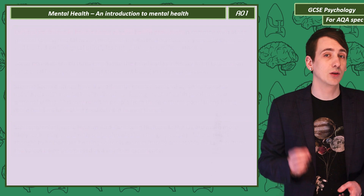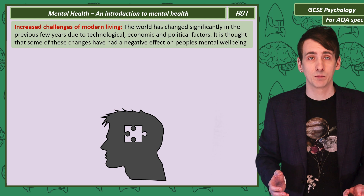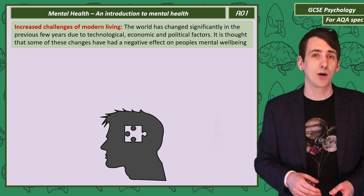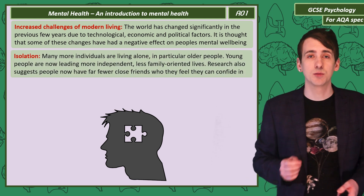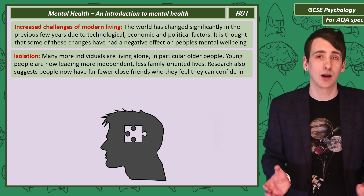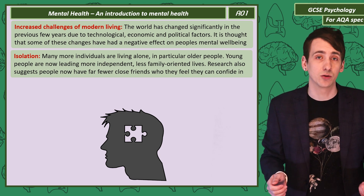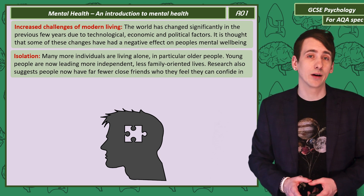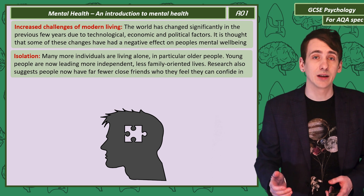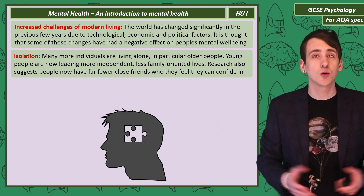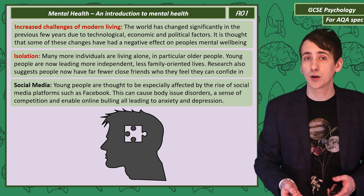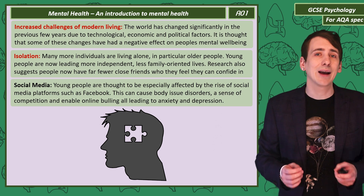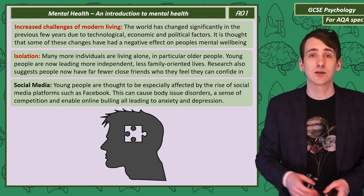Mental health is linked to the environment you live in, and the modern world has changed how we live. Modern living has caused particular pressures due to changes in technology, the economy, and politics. One big change is that people are now much more socially isolated — more people are living alone, especially older people who tend not to live with their children. Younger people are living more independent, less family-focused lives, many moving away from their social networks for work. Research shows people now feel they have fewer close friends to confide in. Social media is thought to have a negative effect on the mental health of younger people, linked to competition, body image disorders, and online bullying — factors leading to anxiety and depression.